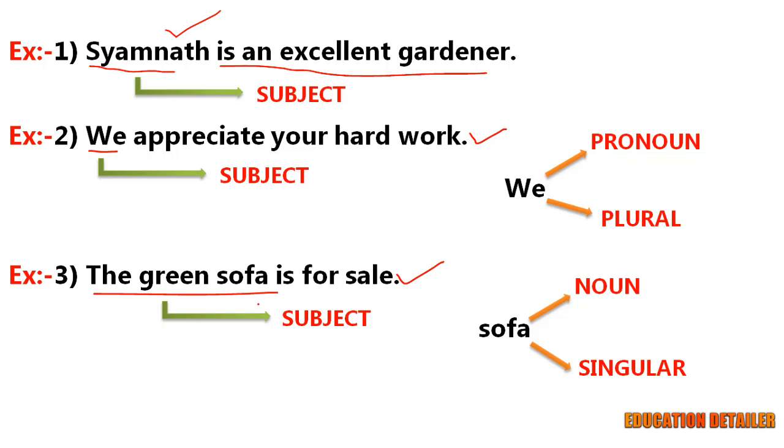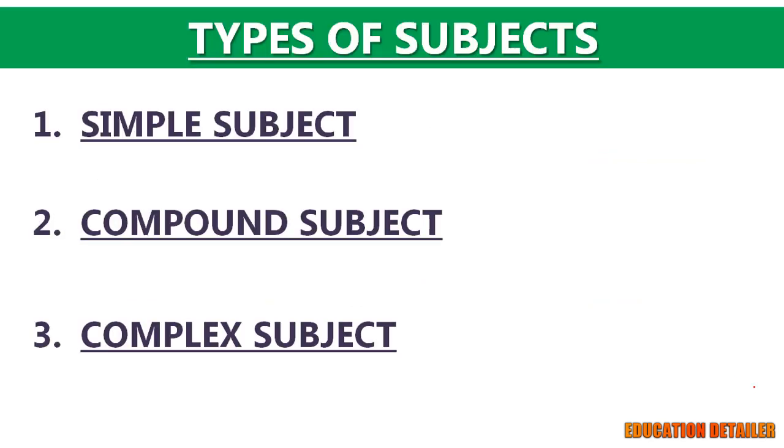Mainly there are three types of subjects in English language: simple subject, compound subject, and complex subject. Let me help you understand all three types with examples.